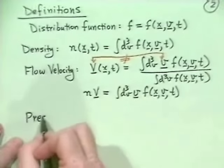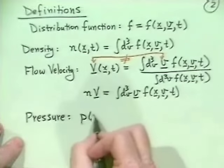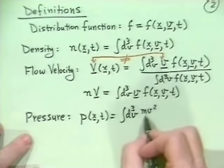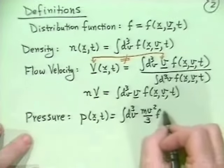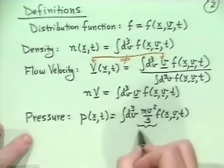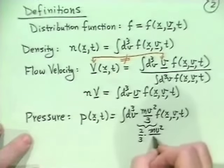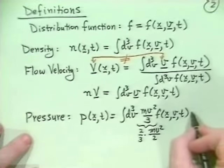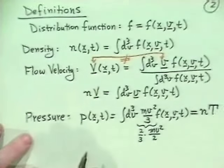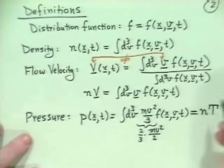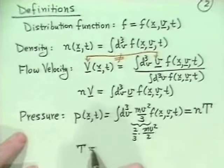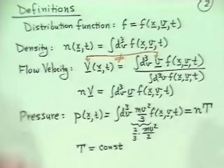Another important quantity is pressure, p(x,t), which is an energy-weighted moment: the integral d³v of mv²/3 times f(x,v,t), or equivalently 2/3 of the energy mv²/2 — the factor of 2/3 comes from three degrees of freedom with kT/2 in each direction. We find it convenient to write this as p = nT, where n is density and T is temperature. Since we're taking T to be constant, pressure will effectively be constant in our treatment.